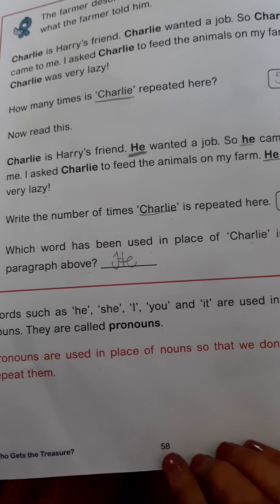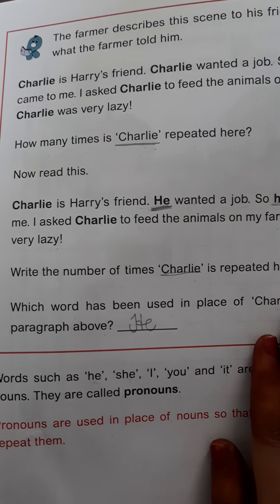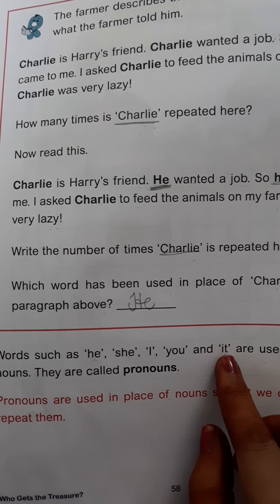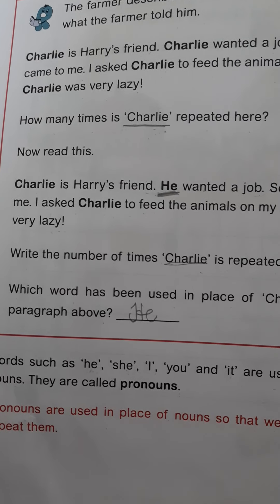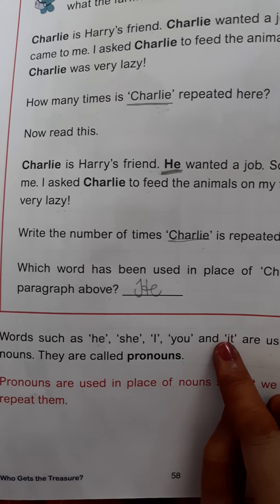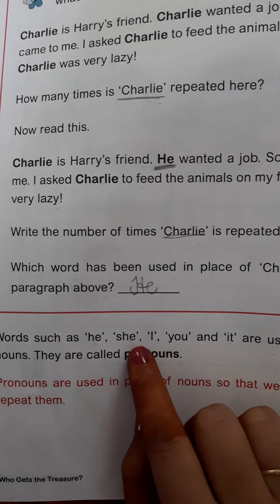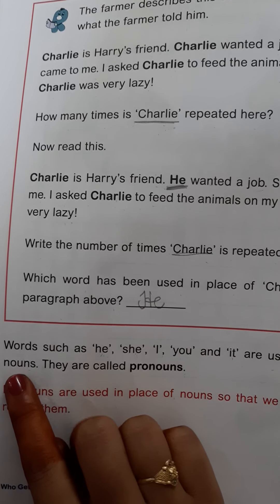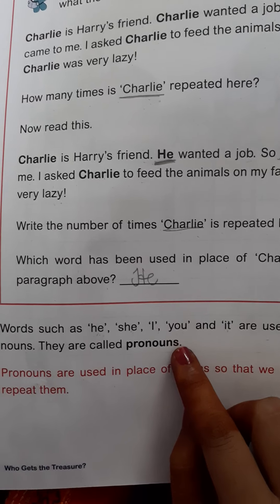Turn your pages. Here, we have already seen that in the place of nouns, we will use certain words: he, she, I, you, and it. Why do we use these? To avoid the repetition of the nouns. These words are called pronouns. Words such as he, she, I, you, and it are used in place of nouns. They are called pronouns.